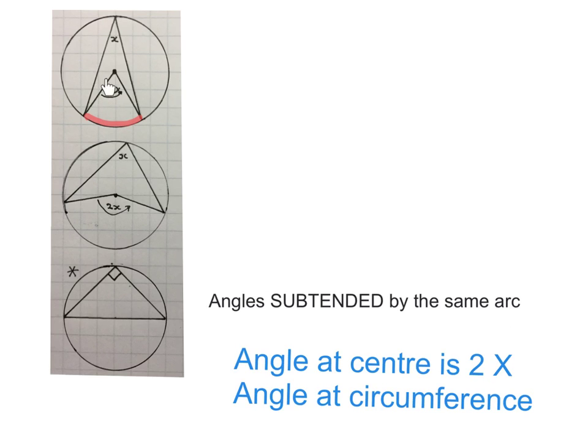The angle at the center subtends is above and this angle is above that arc. So this angle is twice that angle.